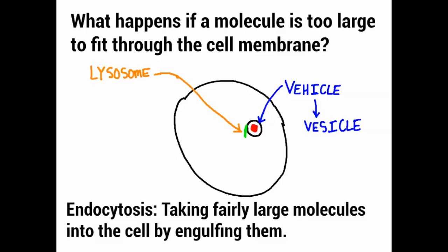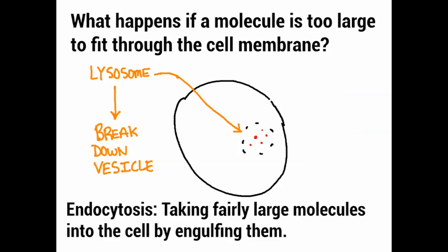And then the lysosome comes along, and if you remember, one thing that the lysosome does is it breaks down the vesicle. As it breaks it down more and more, the pieces are free to float around in the cell.